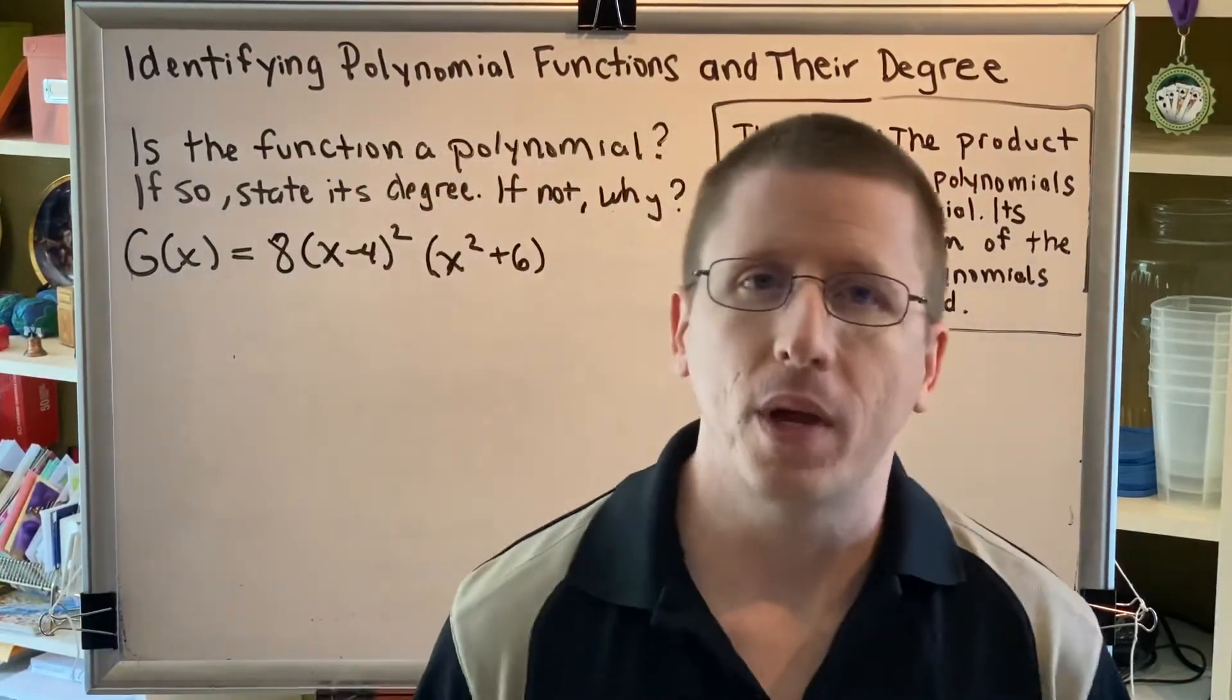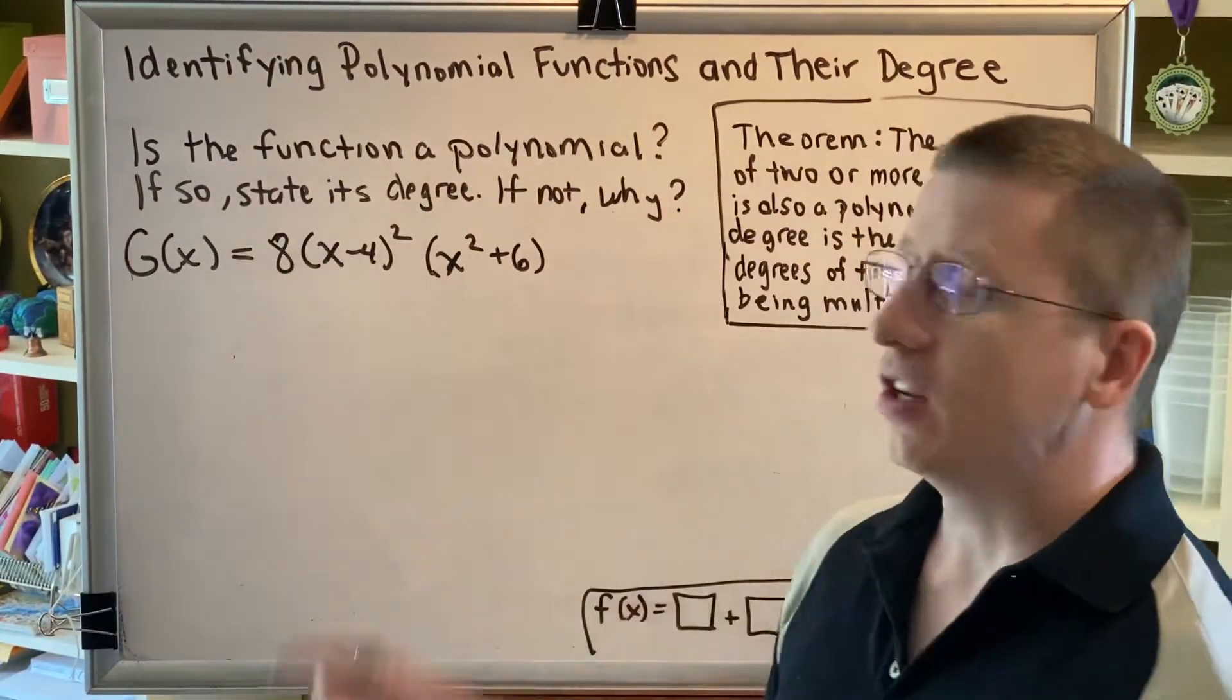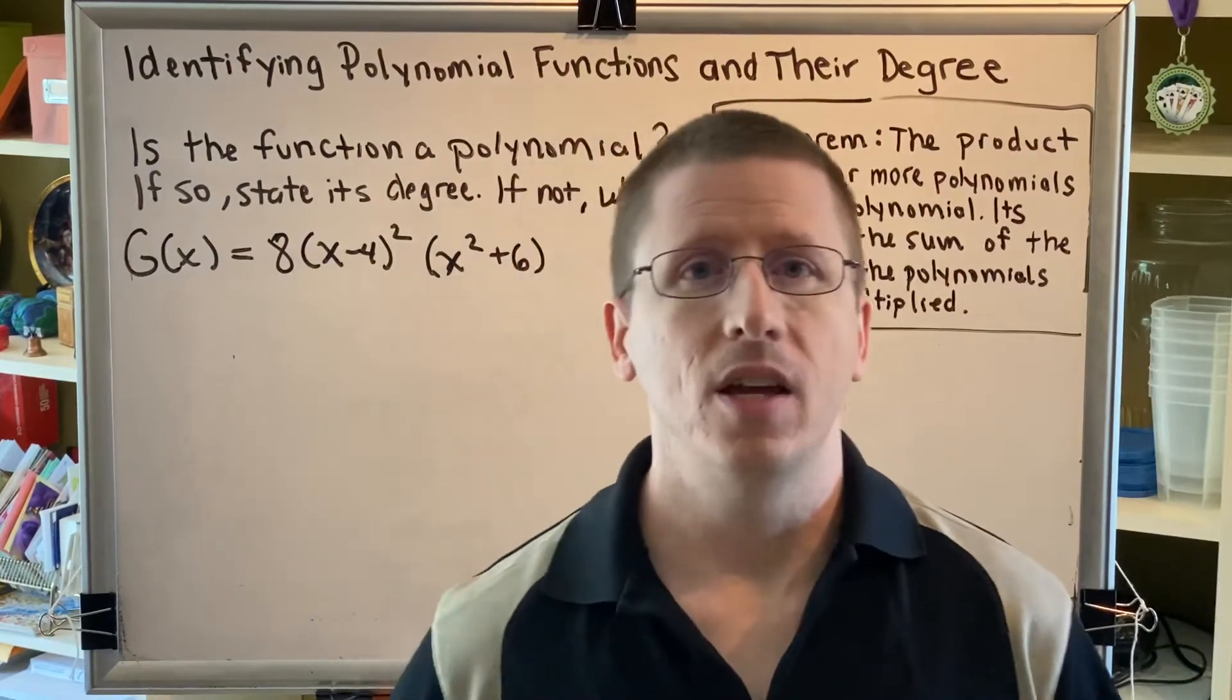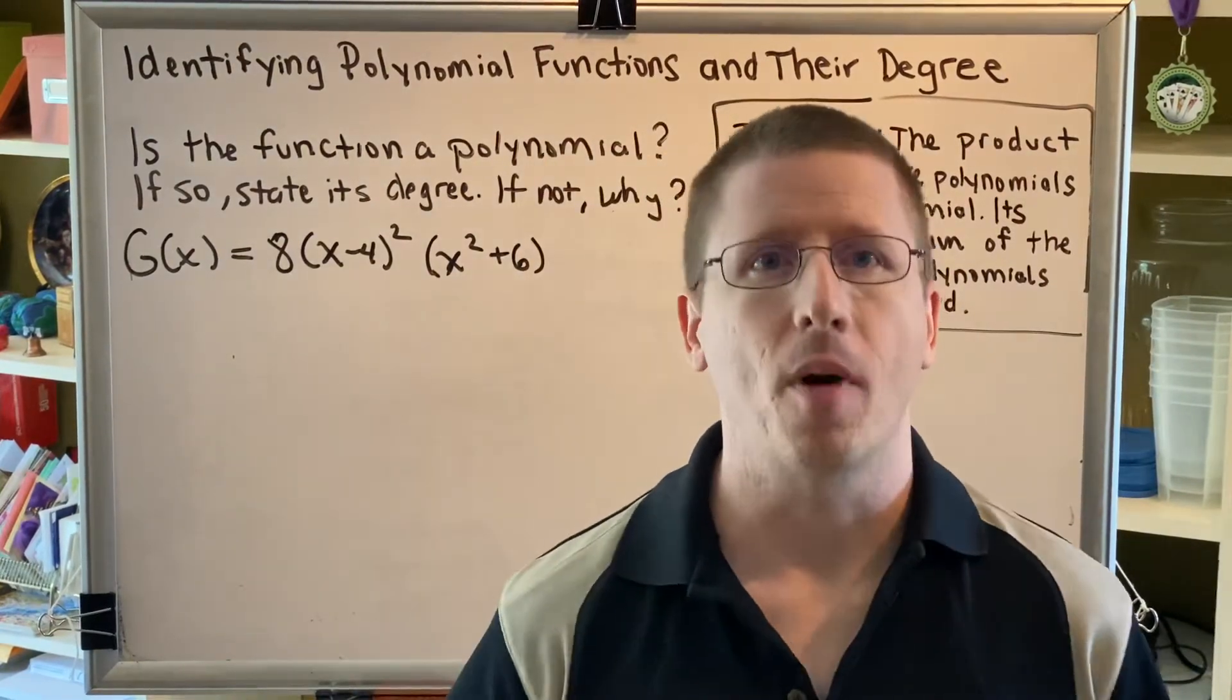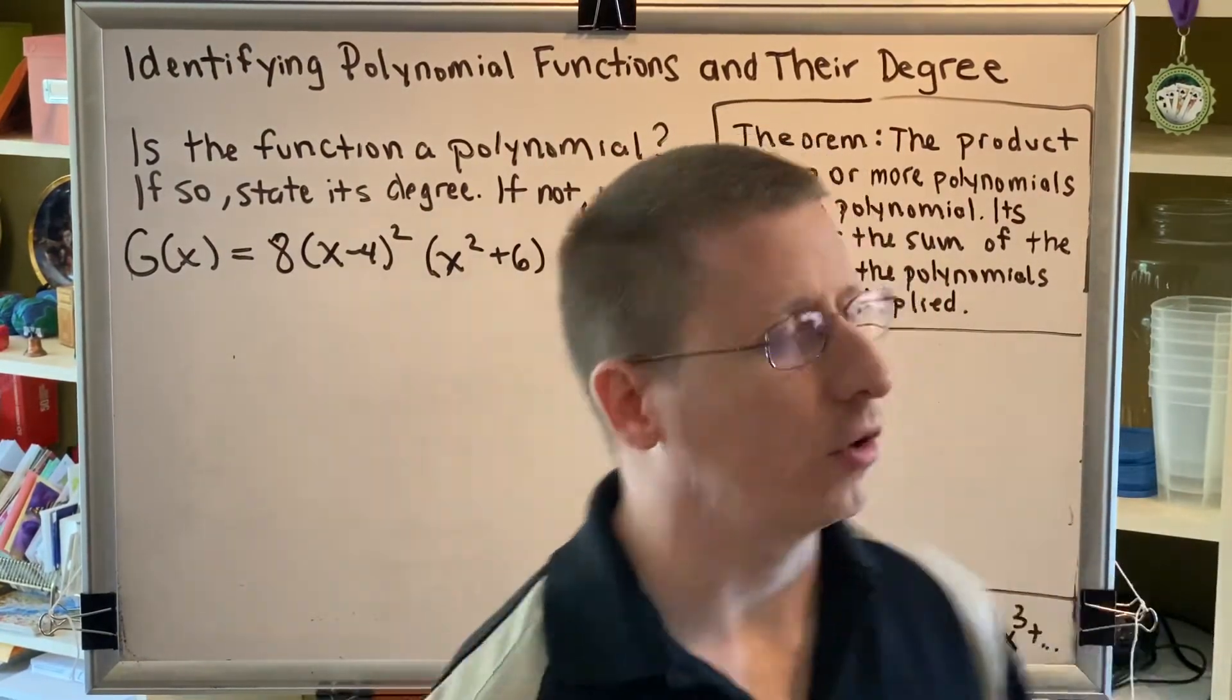This theorem says if we identify that our function is just a bunch of things being multiplied, if we can show that each little thing is a polynomial, then the whole thing is a polynomial.